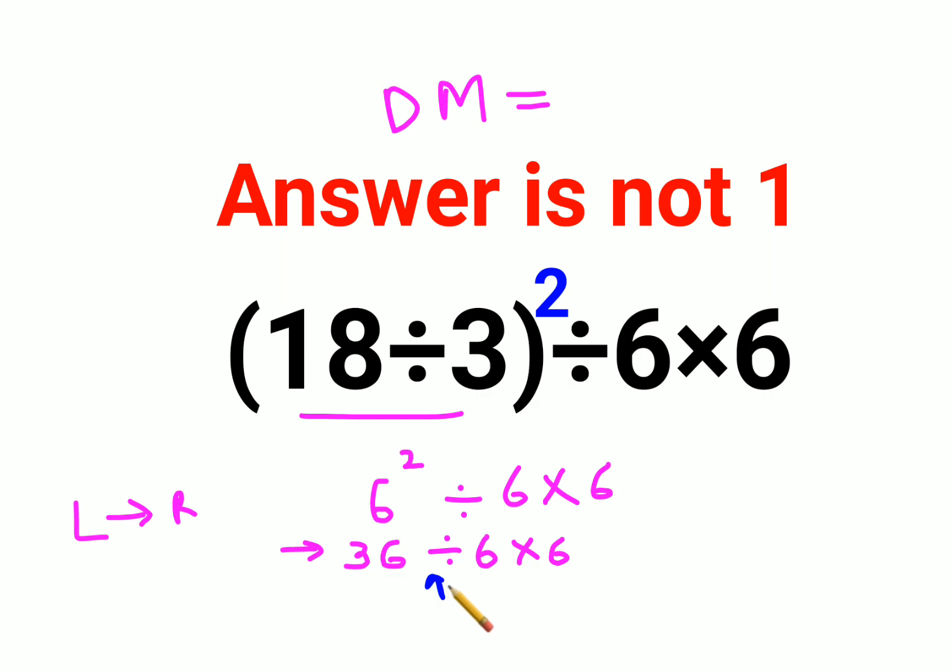So here the first operation is 36 divided by 6. 36 divided by 6 gets you 6, and then you are left with 6 times 6. So the answer comes out to be 36.